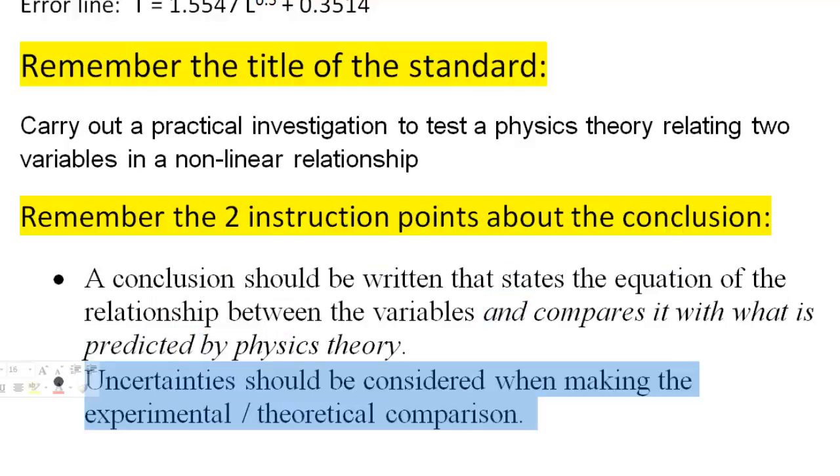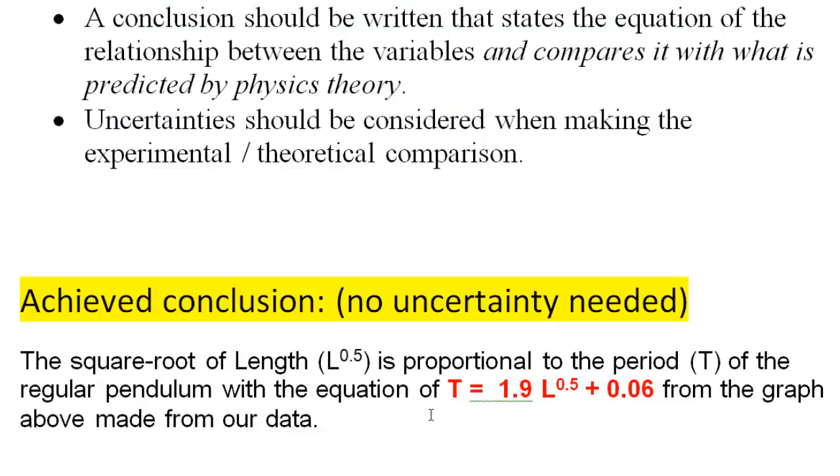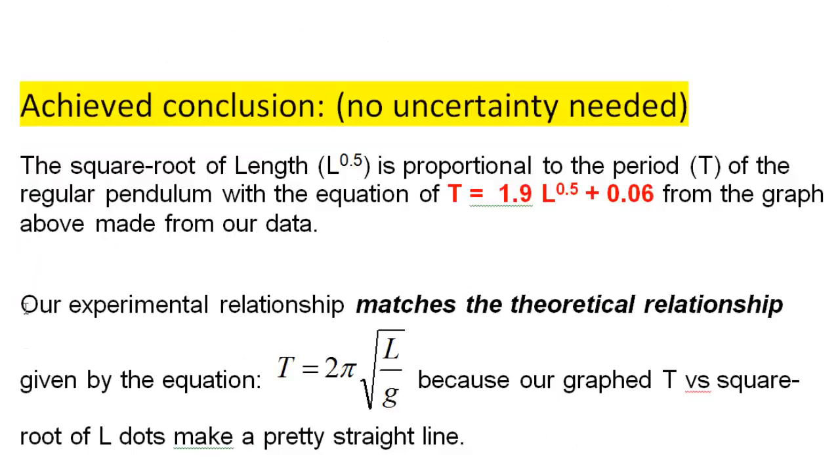So the second part is actually a merit level kind of business. First bit for achieved. Basically it starts out like this, where you have the square root of the length is proportional to the period, just like you would have said in level two. And then you slap down your equation. You can say we got it from our data, but it's sort of obvious, because where else are you going to get it from?